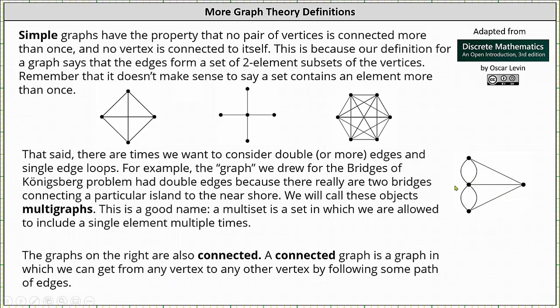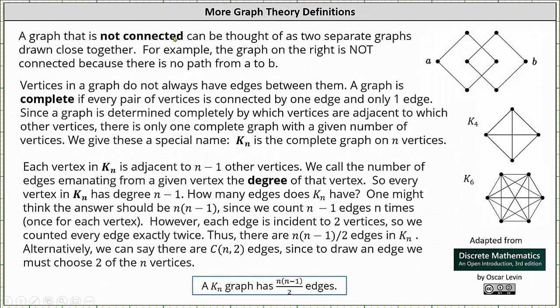And then finally, all of the graphs here are connected. A connected graph is a graph in which we can get from any vertex to any other vertex by following some path of edges. A graph that is not connected can be thought of as two separate graphs drawn close together. For example, the graph on the right is not connected because there is no path from vertex A to vertex B.